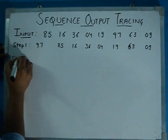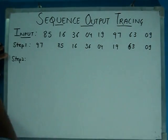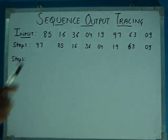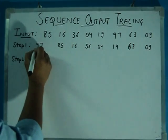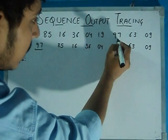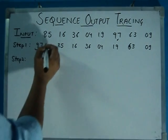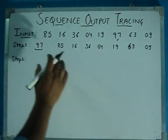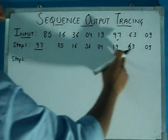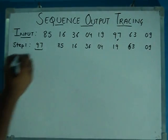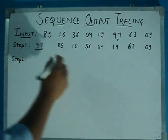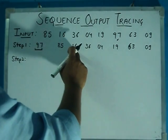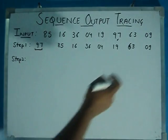Now let's look at step 1. Out of all the numbers, 97 is the biggest number. So we place 97 in the first position. The remaining numbers shift forward in sequence, just as they appear. Now we observe the other numbers: 85, 16, 36, 04, 19, 63, and 09.